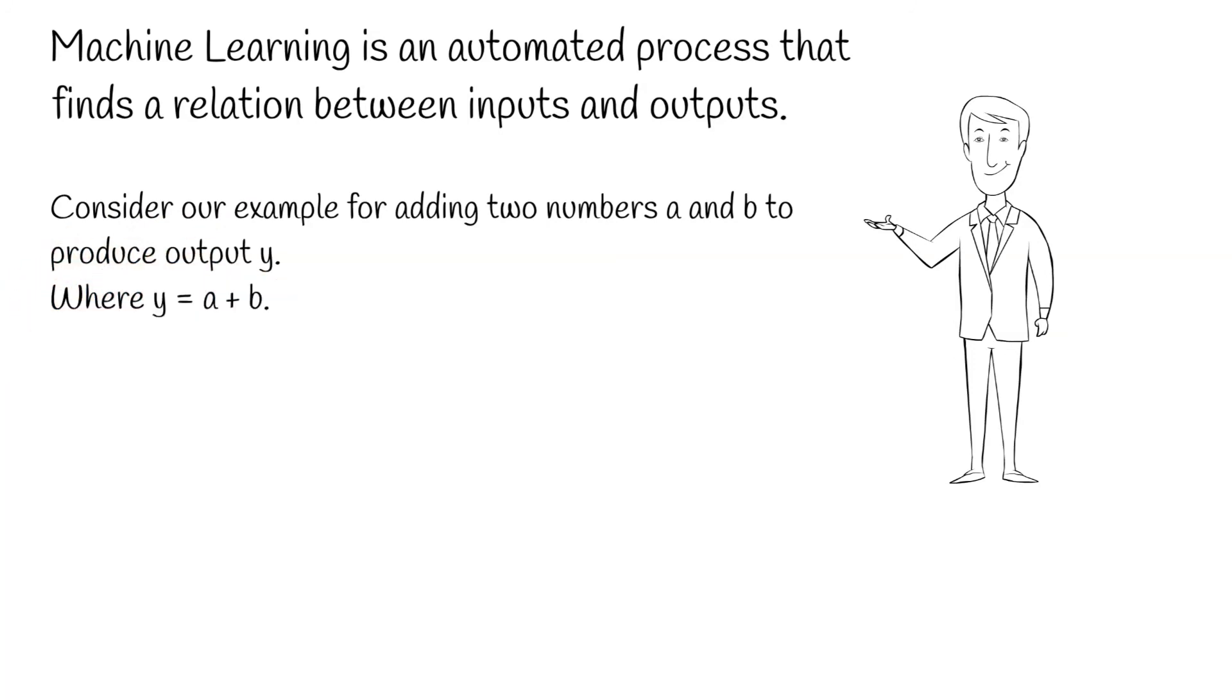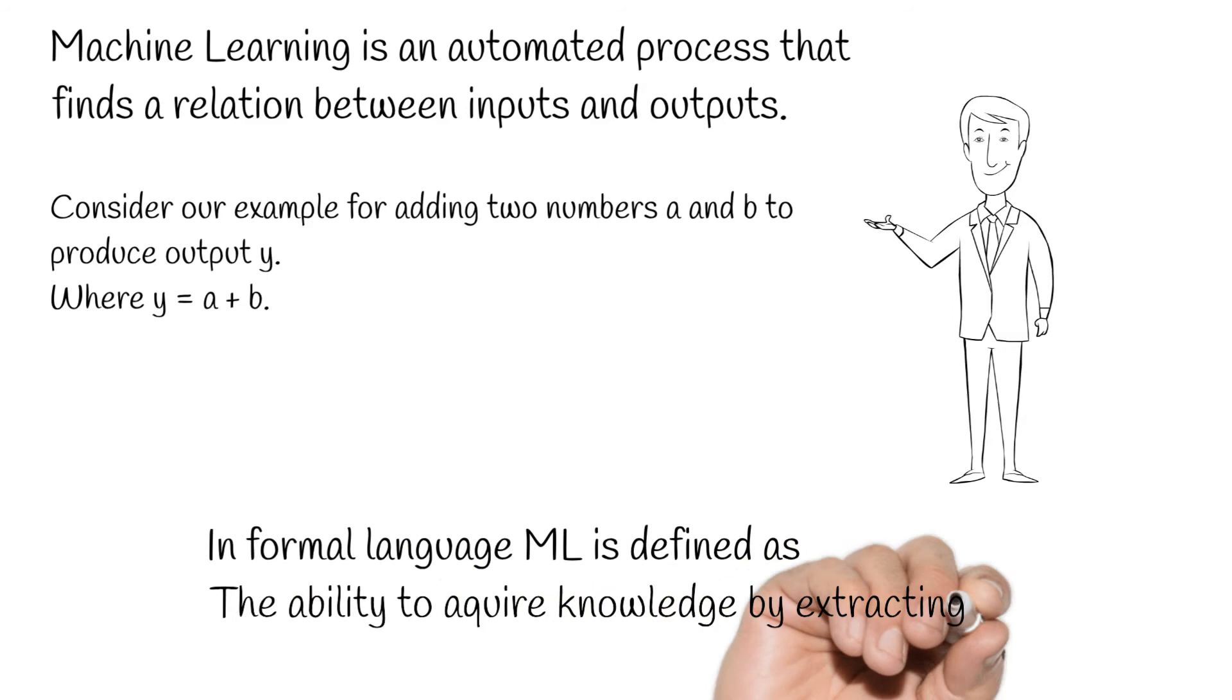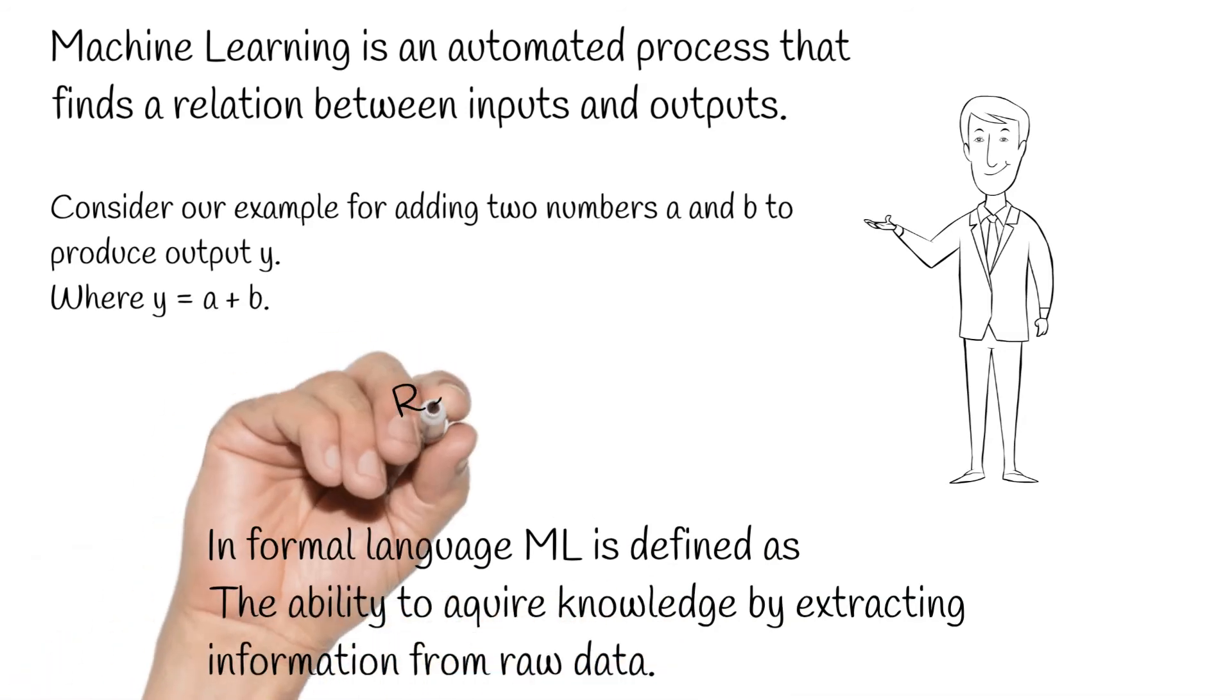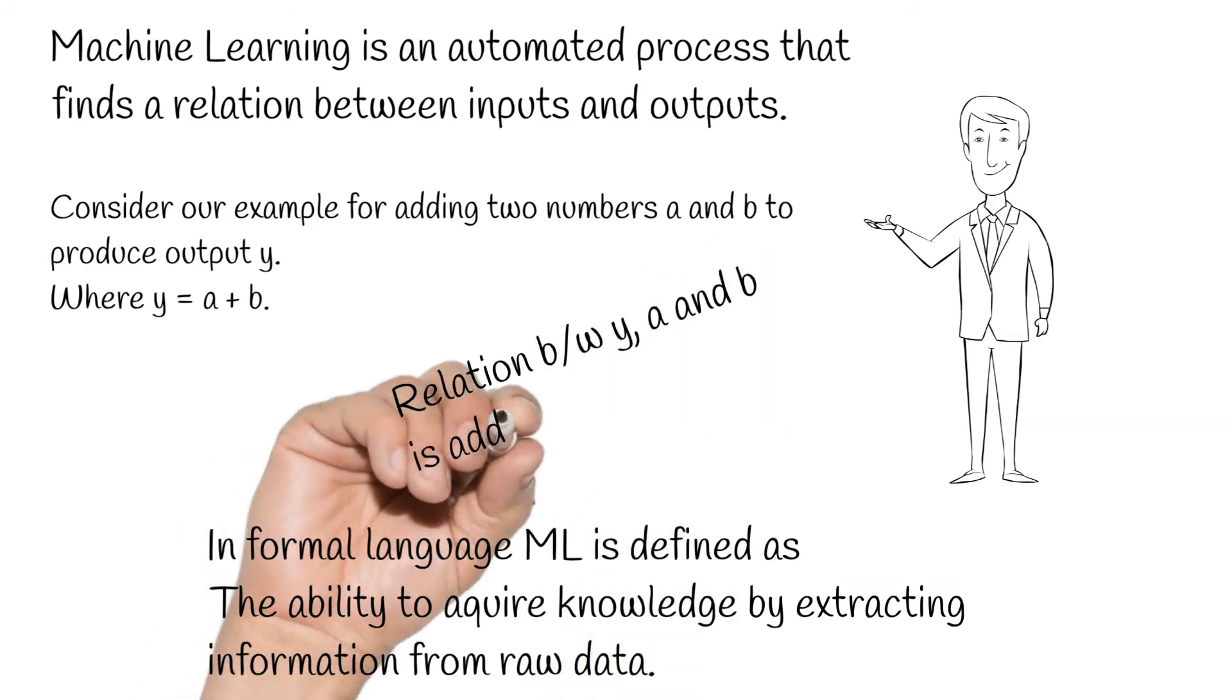Here, y is the output, a and b are called features. So, we can say machine learning is the ability to acquire knowledge by extracting information from raw data. Here, the information is the addition operation.